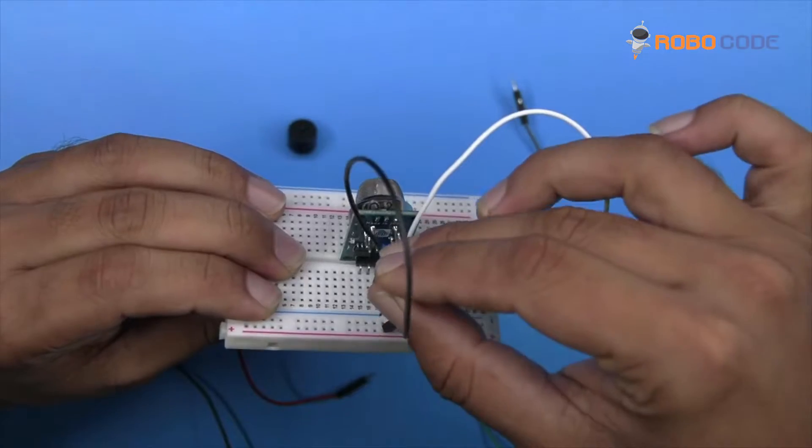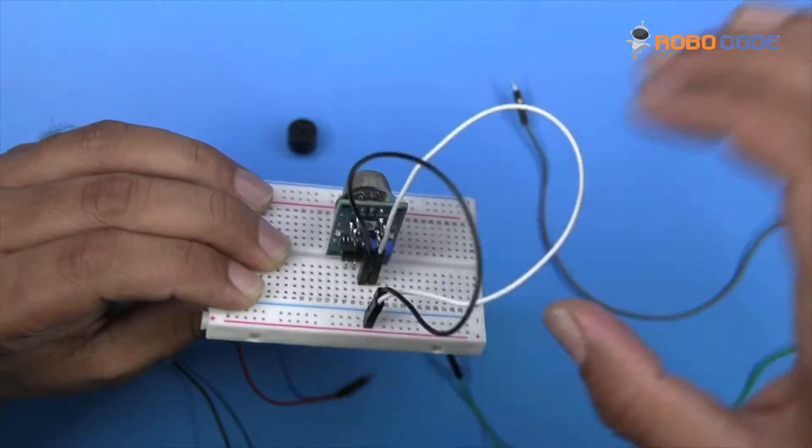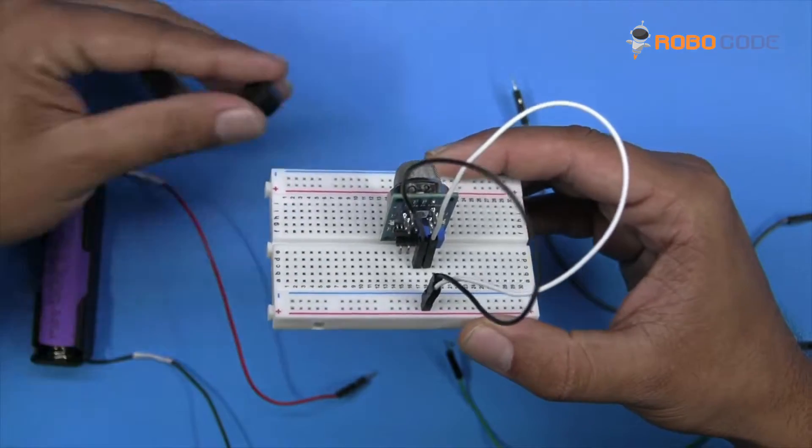Similarly, insert the black wire right next to the white wire.